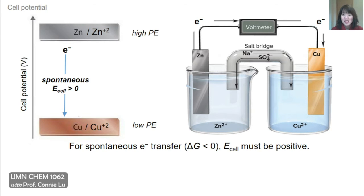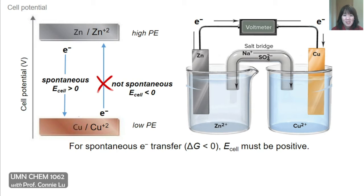When electron transfer is spontaneous, this corresponds to a positive value in the cell potential, where E_cell will be greater than zero. To move an electron in the opposite direction — from copper, which is at low electric potential energy, to high potential energy — would not be spontaneous, and so the E_cell for moving an electron in this direction would be a negative value.